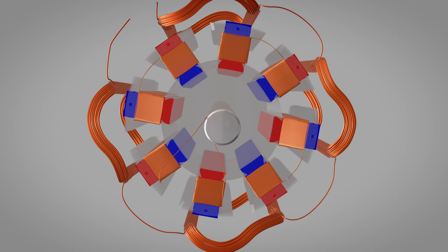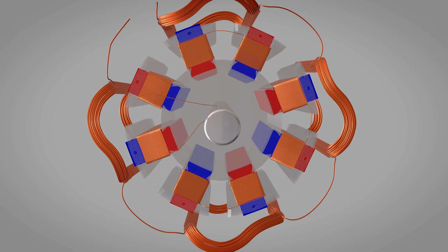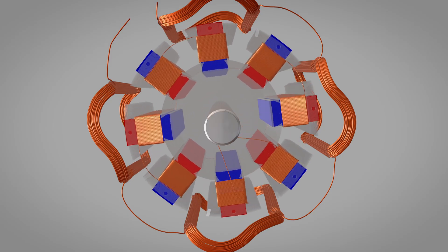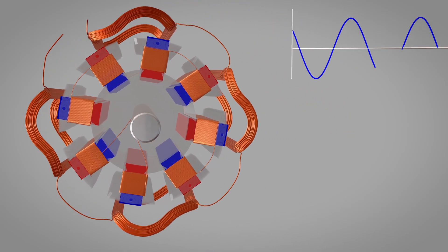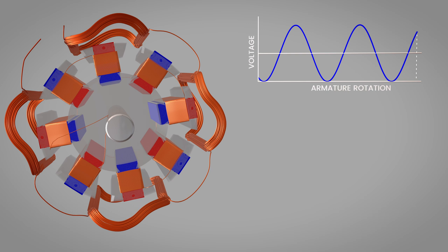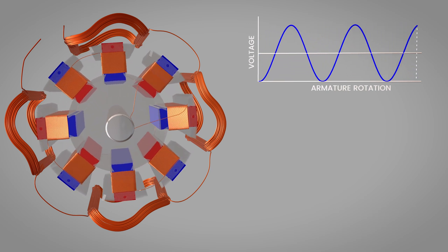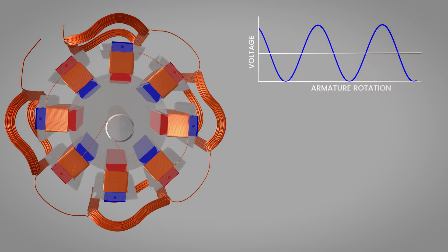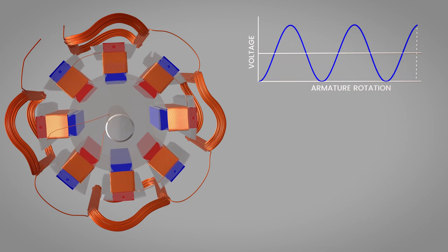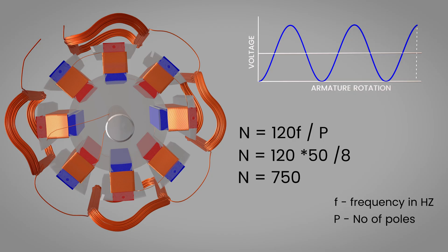With our eight-pole rotor spinning, the coil now experiences four complete flux reversals as all eight poles pass by. Look at the voltage graph. Four complete sine wave cycles occur during one mechanical revolution of the rotor. This means our alternator generates four times higher electrical frequency than a two-pole machine running at the same speed. The required rotational speed for any alternator is determined by the relationship N equals 120F slash P. For our eight-pole alternator generating standard 50 hertz electricity, we get 750 rpm.